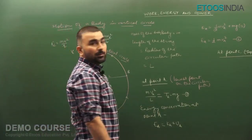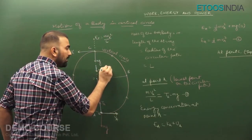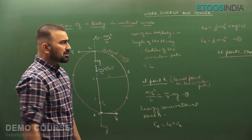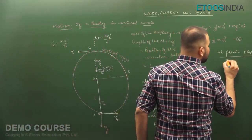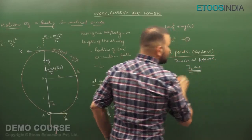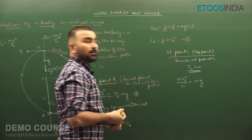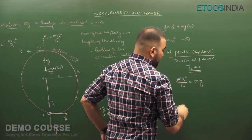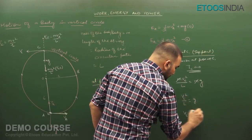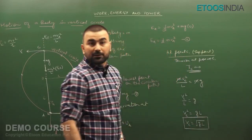Now energy conservation at point C. The velocity at the top point is in the tangential direction, taken as v_C. E_C = ½Mv_C² + potential energy at C. The height at C from the base (point A) is twice L, equivalent to the diameter. So E_C = ½Mv_C² + Mg(2L) = ½Mv_C² + 2MgL. This is equation number four.